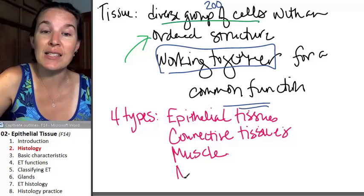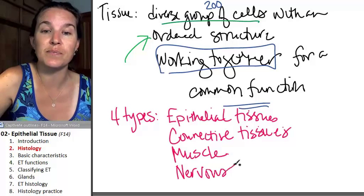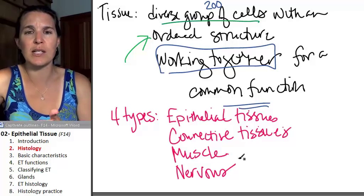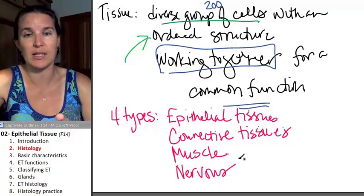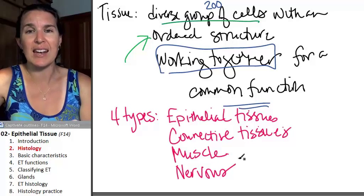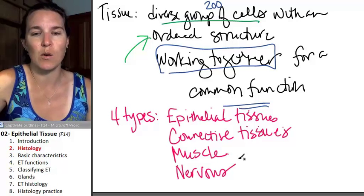And our last type of tissue is nervous tissue. Nervous tissue is a communicative tissue. It's sending messages, and it does so in a really unique way.